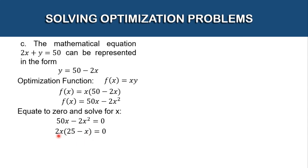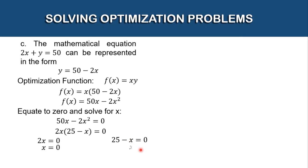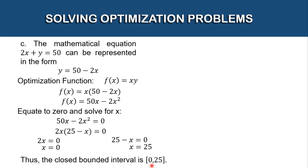Since we have two factors — 2x and (25 - x) — we equate each to 0. For 2x = 0, dividing both sides by 2 gives x = 0. For 25 - x = 0, moving 25 to the other side and dividing by -1 gives x = 25. Thus the closed bounded interval is from 0 to 25.